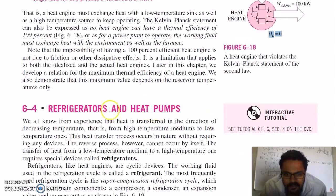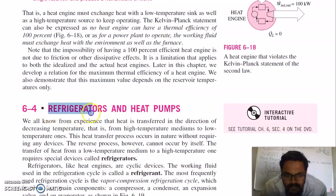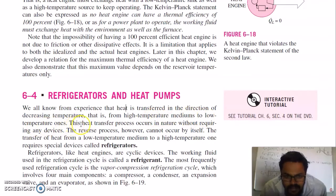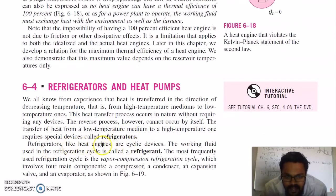Refrigerators and heat pumps are devices used to remove heat and cool down a space. Heat pumps are used to raise the temperature of a space. We know from experience that heat is transferred in a direction of decreasing temperature — from high-temperature mediums to low-temperature ones. This heat transfer process occurs in nature without requiring any device. The reverse process cannot occur by itself. The transfer of heat from a low-temperature medium to a high-temperature one requires special devices called refrigerators. Refrigerators, like heat engines, are cyclic devices. The working fluid used in the refrigeration cycle is called refrigerant. The most frequently used refrigeration cycle is the vapor compression refrigeration cycle.